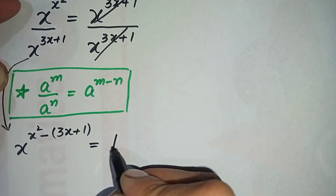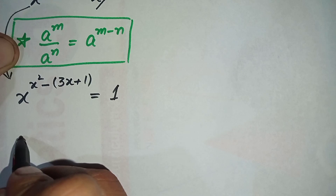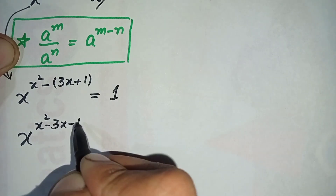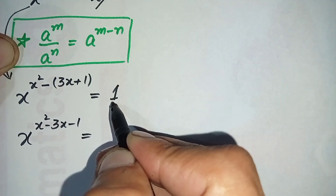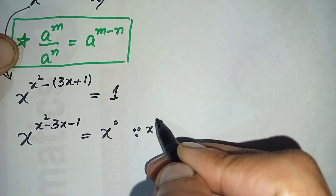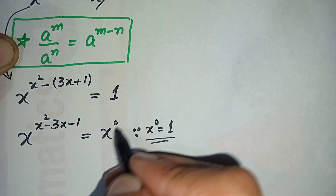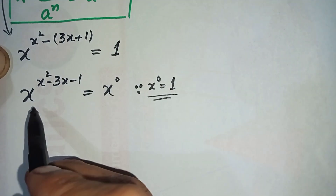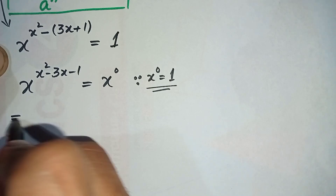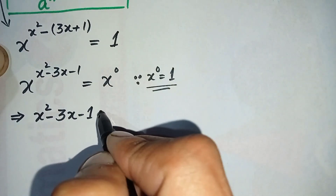On the right-hand side this cancels leaving only 1. Multiplying the minus sign inside the parenthesis, the equation becomes x raised to power x² minus 3x minus 1 equals 1. We can write this 1 as x raised to power 0, because any non-zero number raised to power 0 is always equal to 1. Now on both sides the bases are the same, so we compare the powers, giving us x² minus 3x minus 1 equals 0.